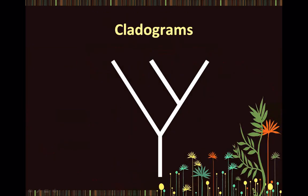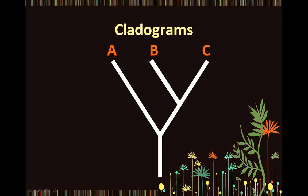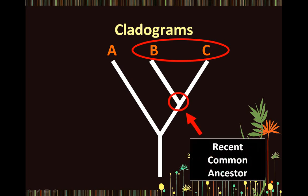So if we consider this cladogram and label all the tips as A, B, and C, this diagram represents the hypothesis that when we are considering the species A, B, and C, species B and C share a closer relationship than either B or C do with A. This is because a more recent common ancestor has given rise to B and C, and therefore they are more closely related.